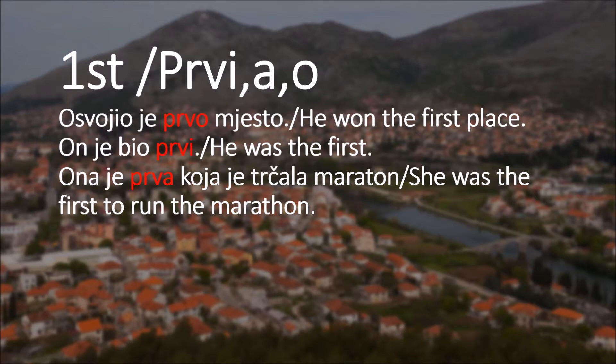Example: osvoji je prvo mjesto - he won the first place. We use prvo because mjesto is a neuter noun, so we use prvo instead of prvi or prva. On je bio prvi - he was the first. Here we use prvi because on is masculine.